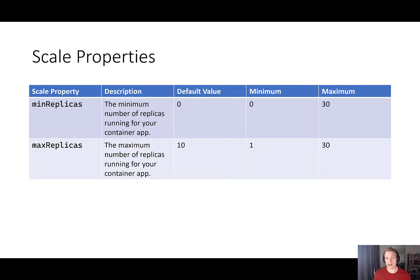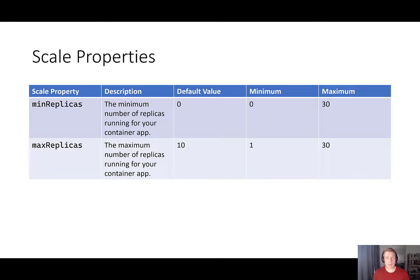There are two scale properties that apply to all scaling rules in your Container App: the minimum number of replicas running and the maximum number of replicas running. With Azure Container Apps, we can scale our app to zero, which prevents our app from being charged for usage. However, if we want to ensure that an instance of our application is always running, we need to set the minimum replica count to one or higher to make sure that we don't get any cold starts.